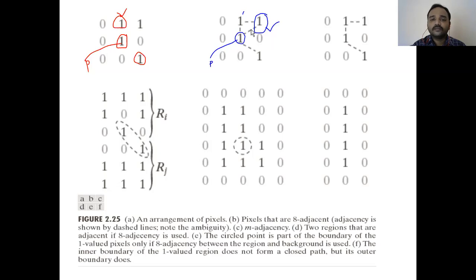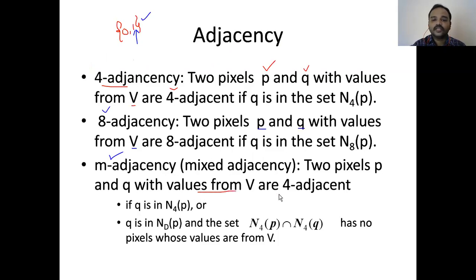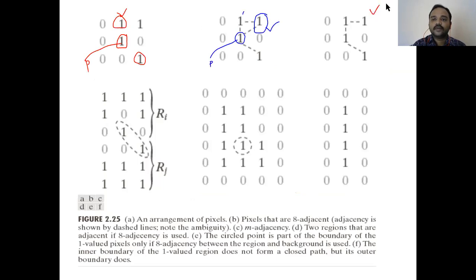To overcome this ambiguity we go for mixed adjacency. Two pixels with values from V are m-adjacent if q is in the four-neighbors of p, or q is in the diagonal neighbors of p and the set of four-neighbors of p intersected with the four-neighbors of q has no pixels whose values are from V. These are the conditions for m-adjacency, and with m-adjacency there is no ambiguity.